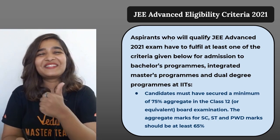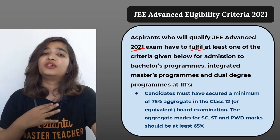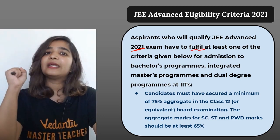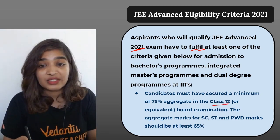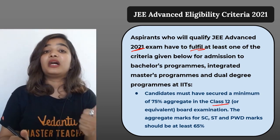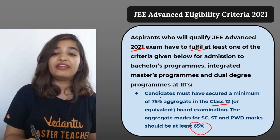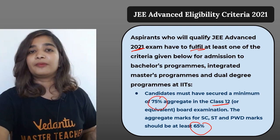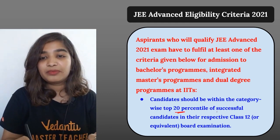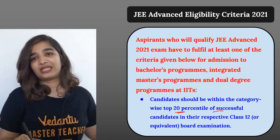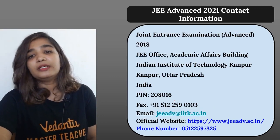Candidates who qualify JEE Advanced 2021 must fulfill at least one of the following academic criteria: candidates must have secured a minimum of 75% aggregate in class 12 or equivalent board examination. For SC, ST, or PwD candidates, the aggregate required is 65%. Additionally, candidates should be within the category-wise top 20 percentile of successful candidates in their respective class 12 board examination.